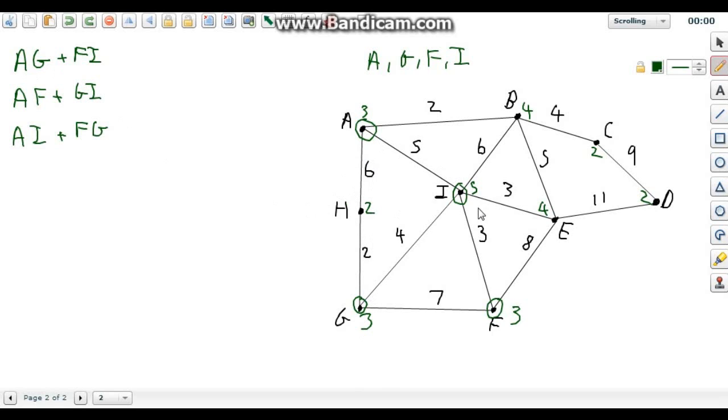So A to G, the shortest path to get this way, would be the six and the two, which will give us eight. And then F to I, these are directly connected by an arc of weight three. So this will add up to get us a total weight of 11.